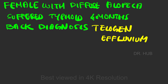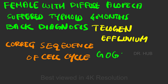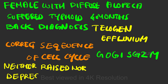— the diagnosis is telogen effluvium. The correct sequence of the cell cycle is G0, G1, S, G2, and M. A lesion that is neither raised nor depressed is the macule.